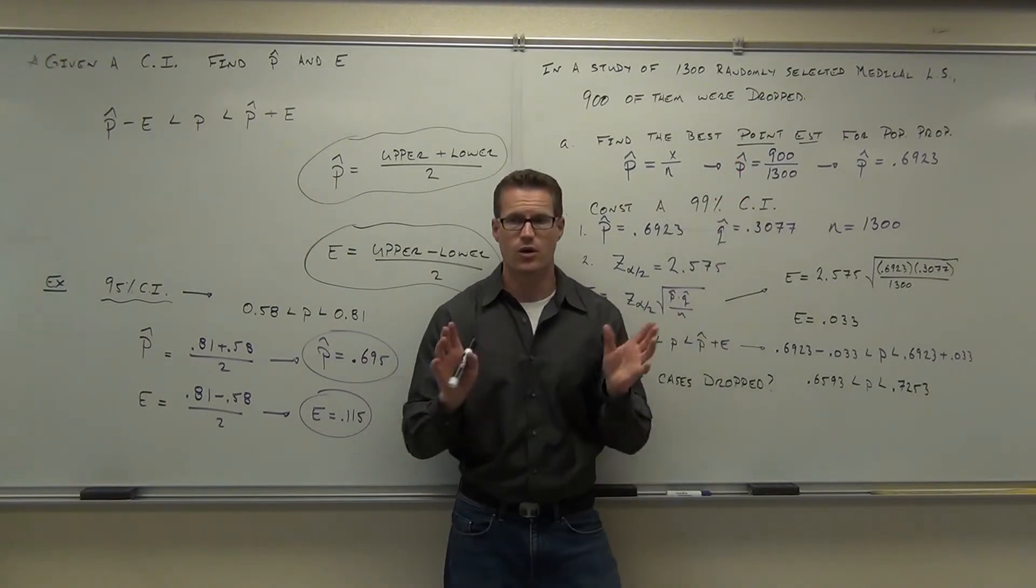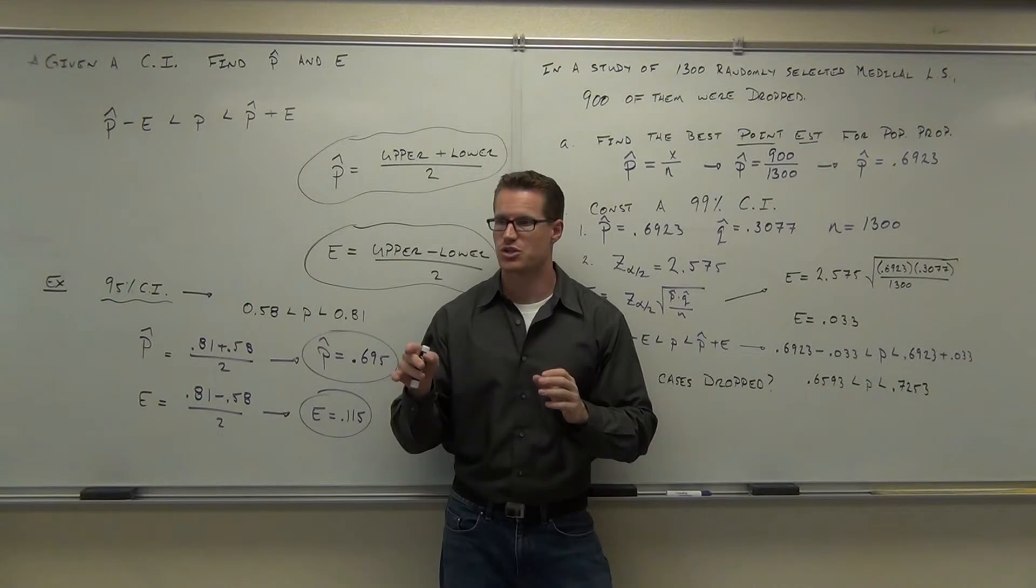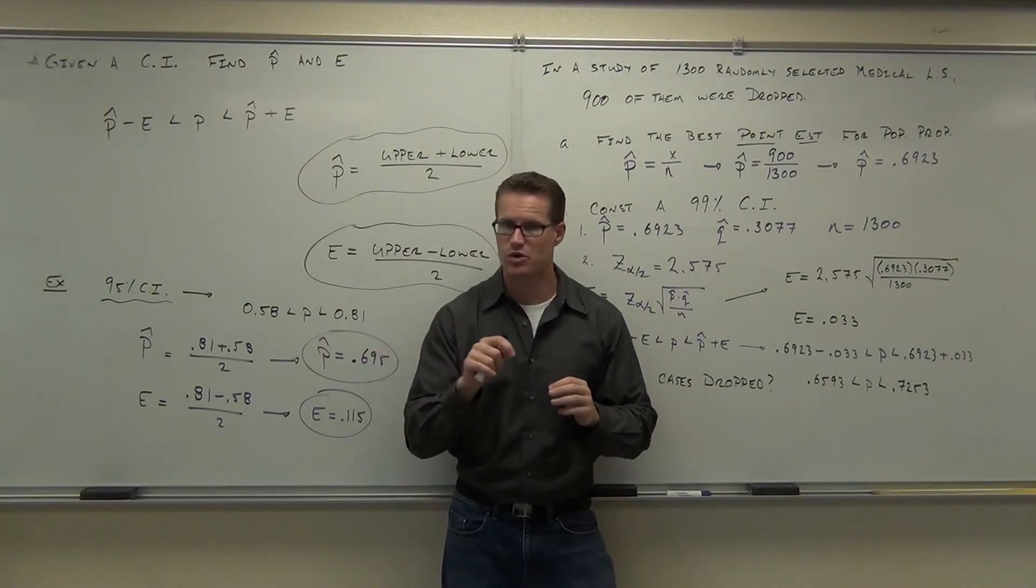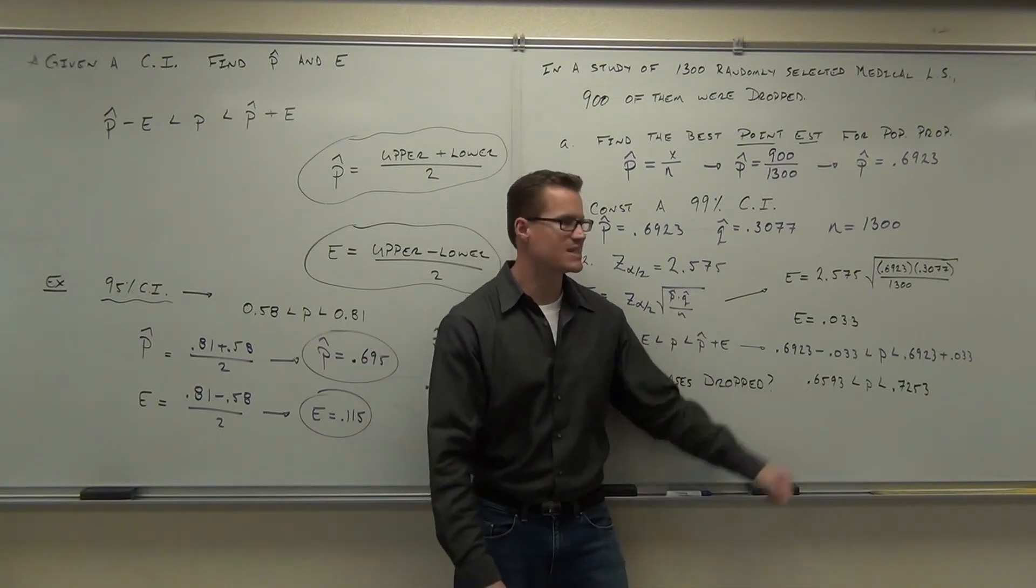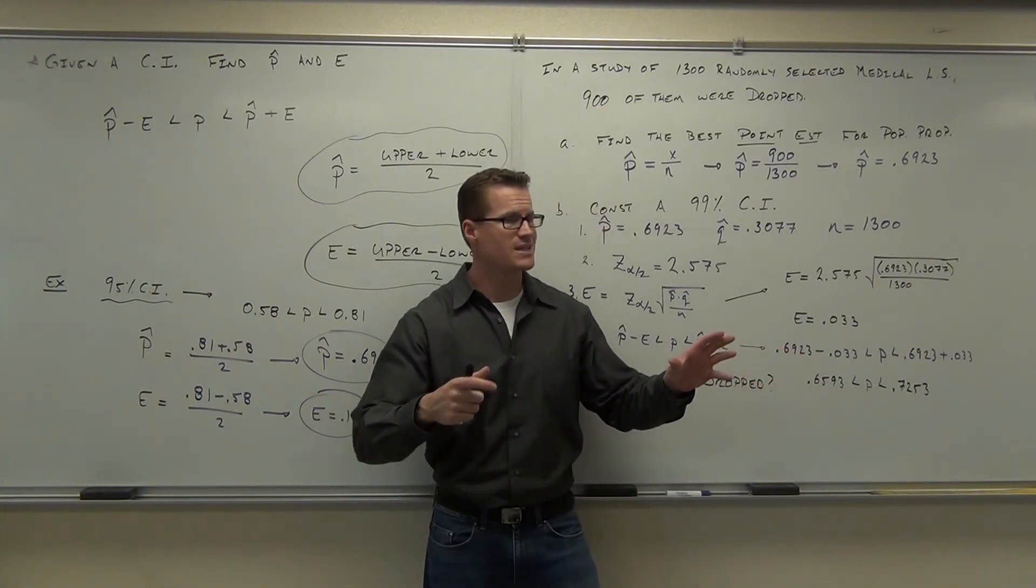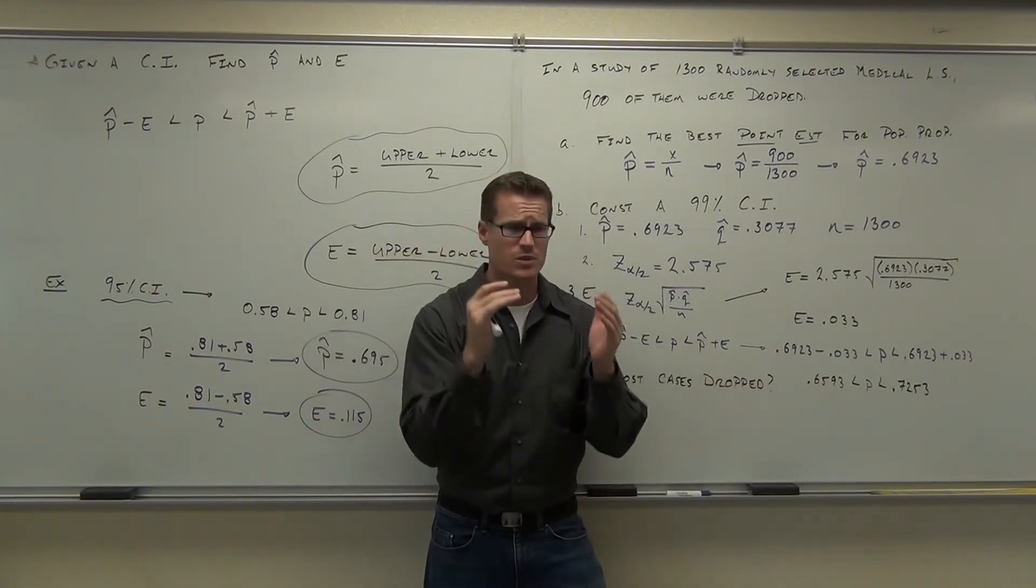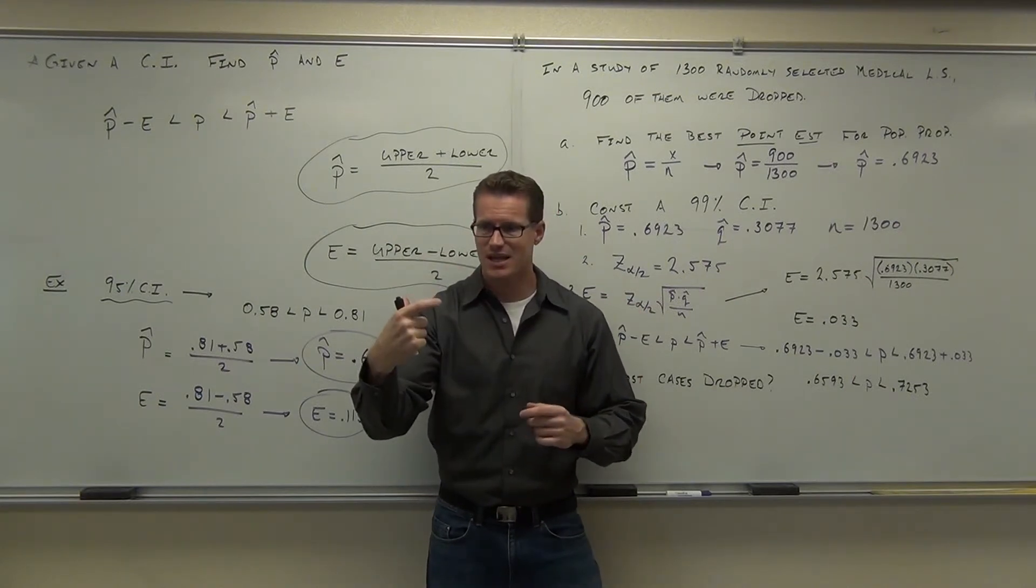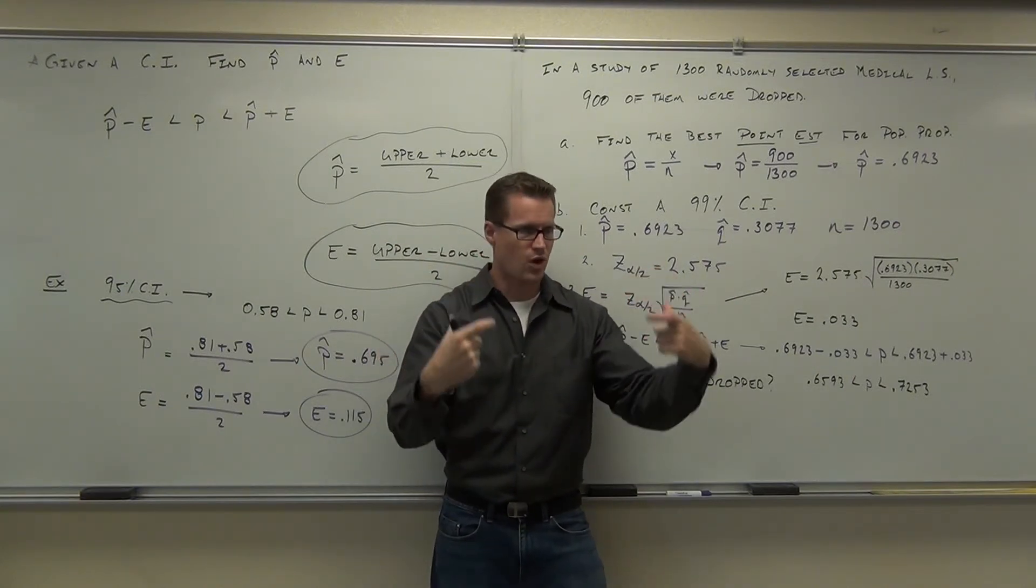We're dealing with lawsuits, right? I don't know. But I'm 99% sure the actual population proportion falls somewhere between 66% and 73%. You're almost 100% sure, 99%, that between 66% and 73% of the lawsuits are dropped.